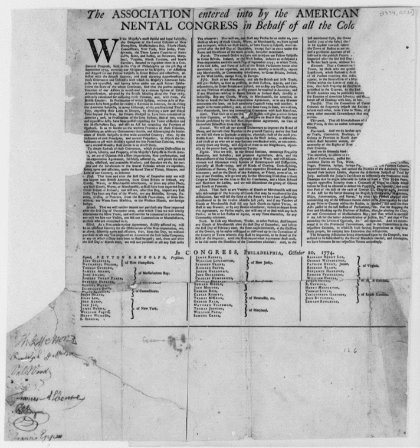The Continental Association, often known simply as the Association, was a system created by the First Continental Congress in 1774 for implementing a trade boycott with Great Britain. Congress hoped that by imposing economic sanctions, they would pressure Great Britain into redressing the grievances of the colonies, in particular repealing the Intolerable Acts passed by the British Parliament. The Association aimed to alter Britain's policies towards the colonies without severing allegiance.